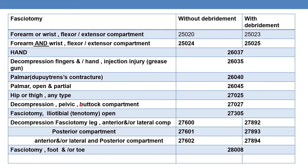For fasciotomy of the hip or thigh, any type, report 27025. For decompression fasciotomy of the pelvic/buttock compartment, report 27027. For fasciotomy of the iliotibial band, open — which also includes tenotomy — report 27305.